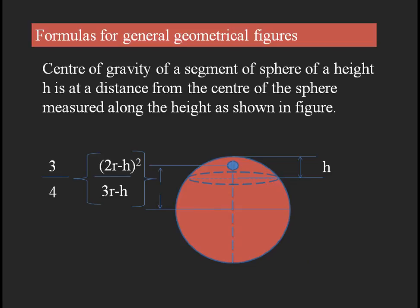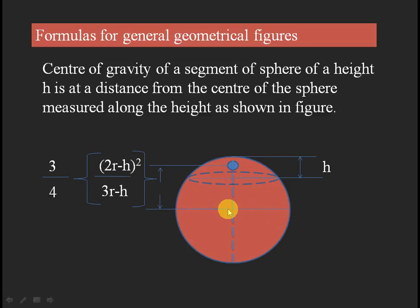For a spherical segment — a particular portion of a sphere cut at a certain height — the center of gravity is measured from the center of the sphere. The formula is (3/4) × (2r − h)² / (3r − h), where r is the radius and h is the height of the segment.